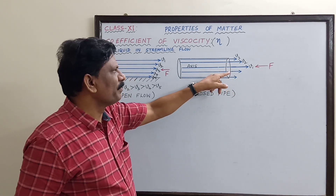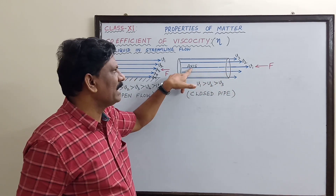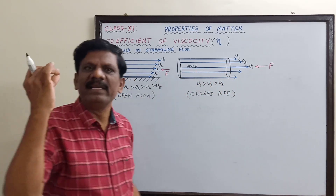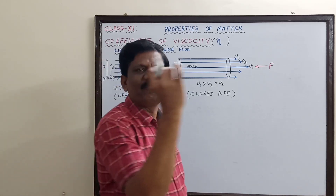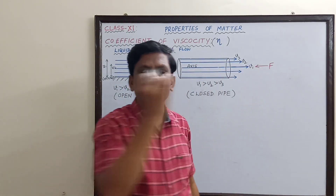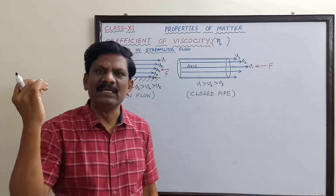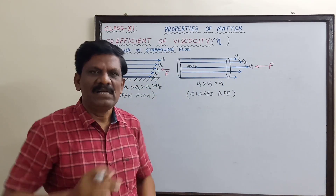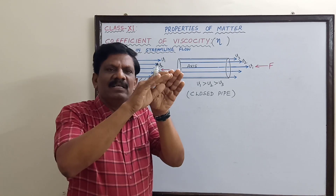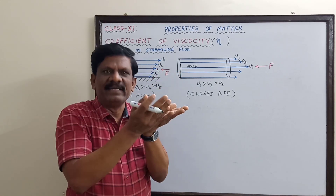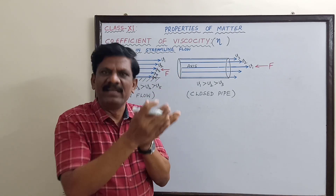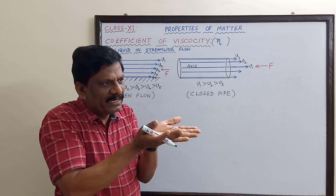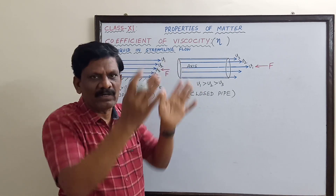You can see in this pipe — this is the axis — so a cylindrical layer flowing along the axis will have the highest velocity, and the next coaxial cylinder will have a little less velocity.